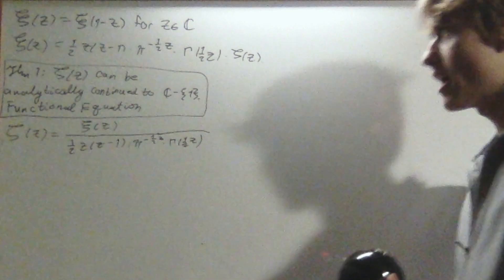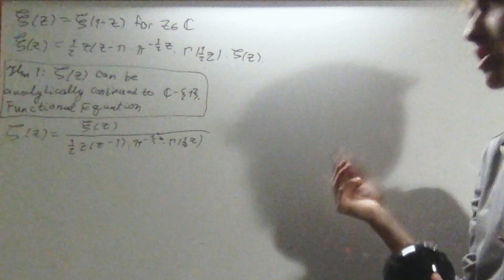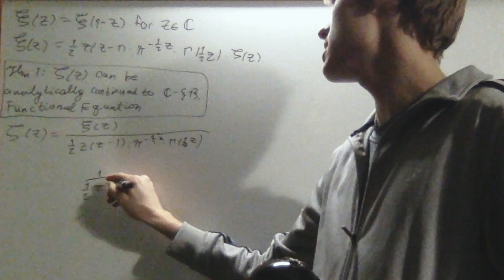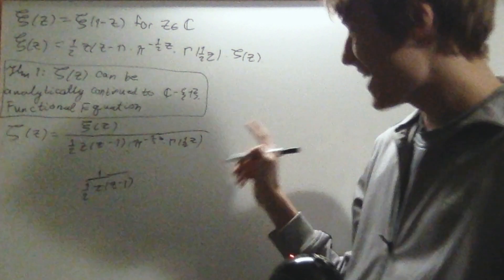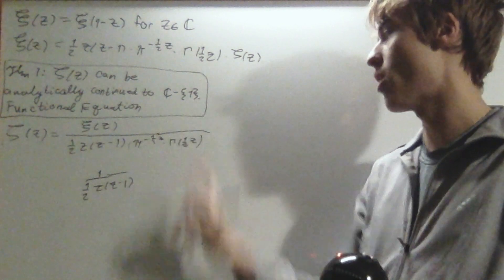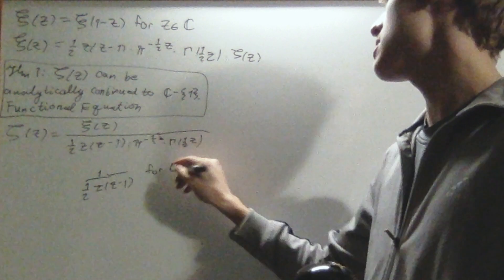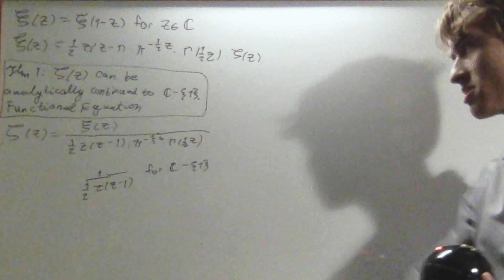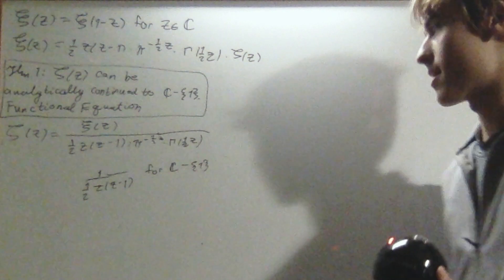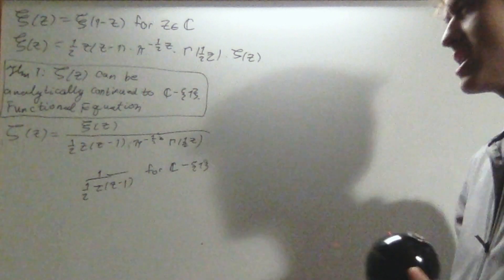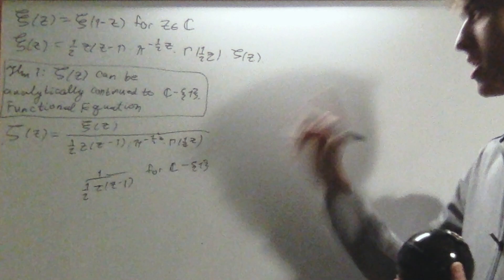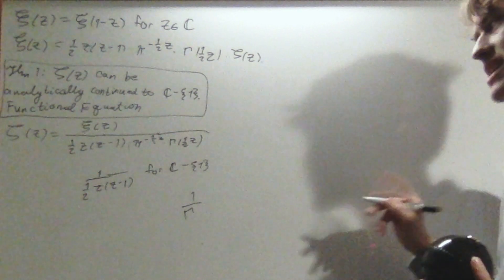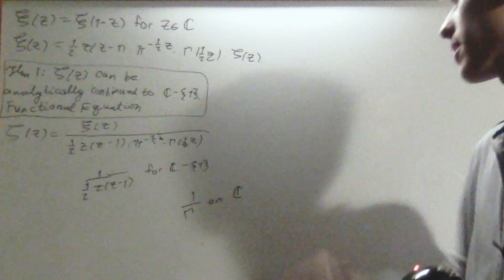Xi of z is analytic on all of ℂ — that's what we just talked about. Now 1 over (1/2)z(z-1) is analytic except for z = 1, so this is for ℂ removing {1}. That's why we have to have the ℂ removing {1} here — it's because of that term. And 1 over π^{-z/2} is analytic for every value.